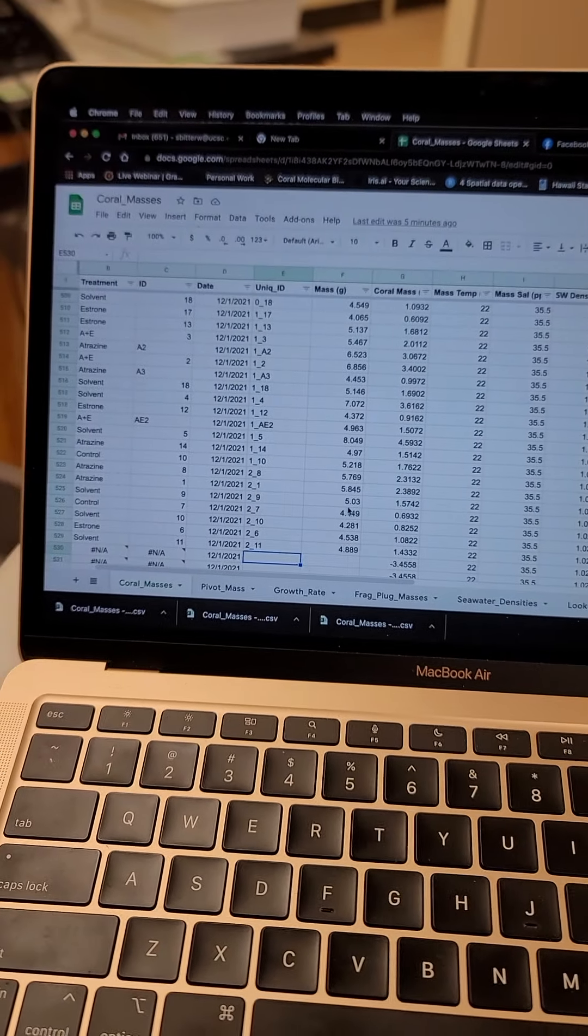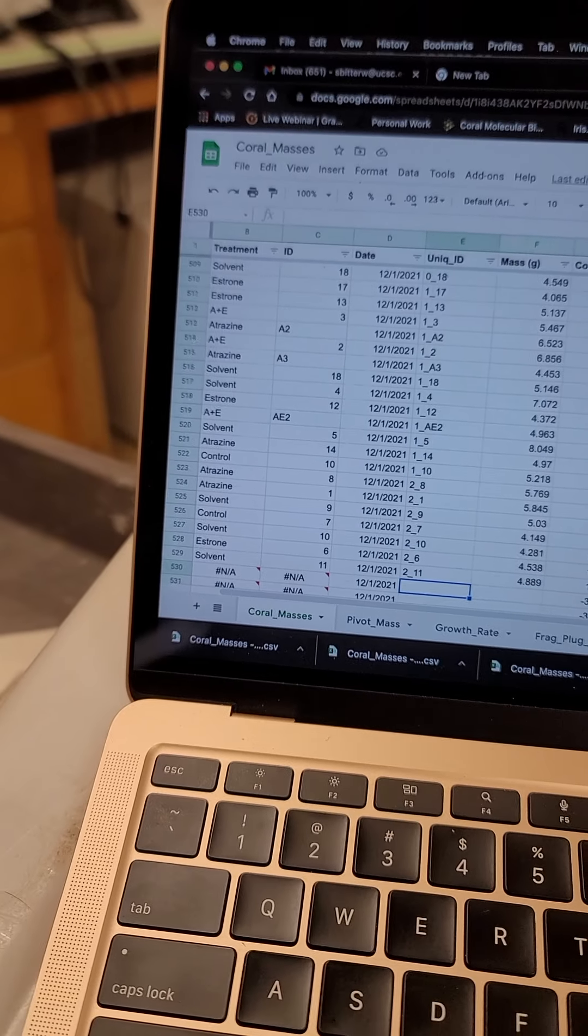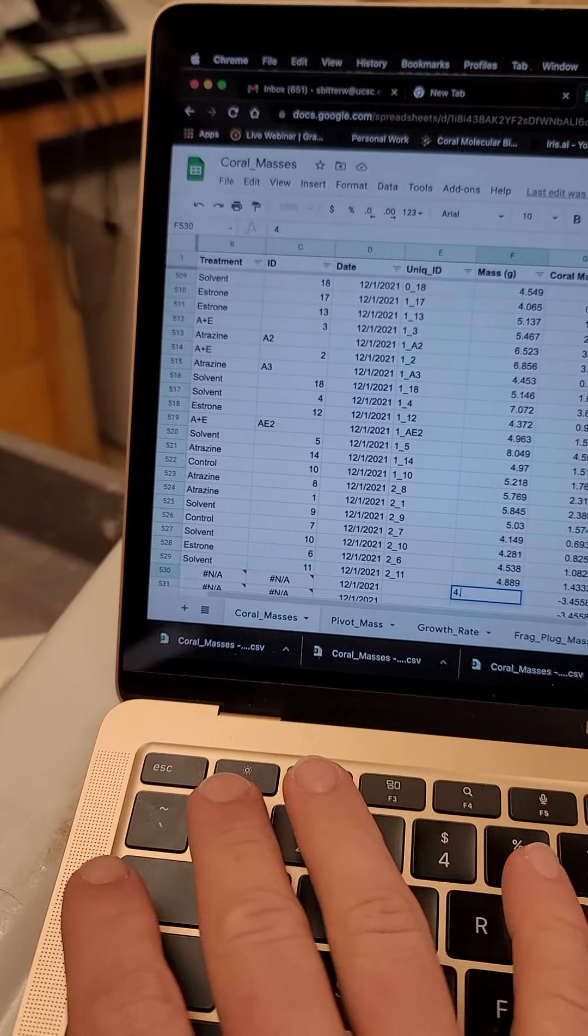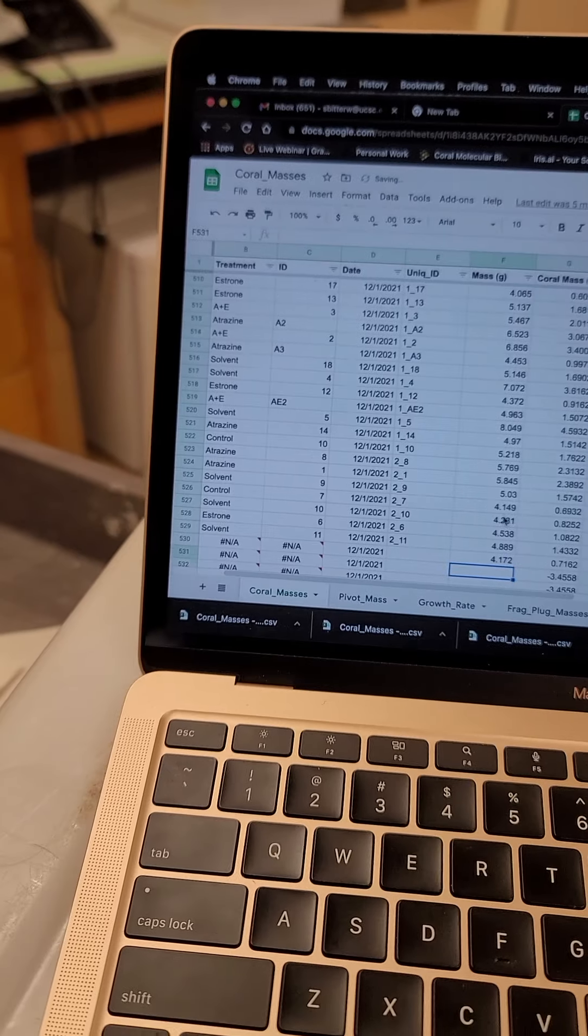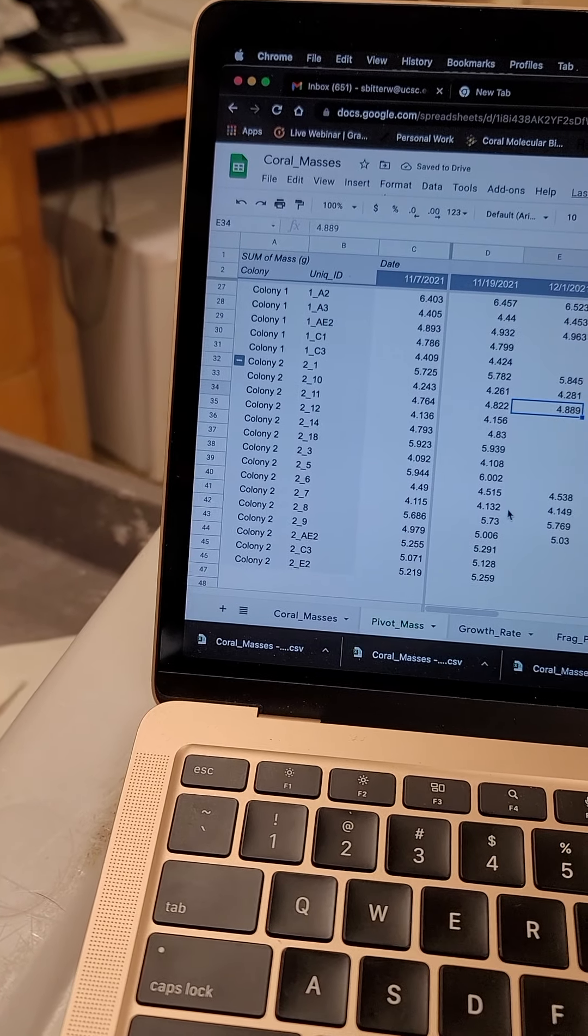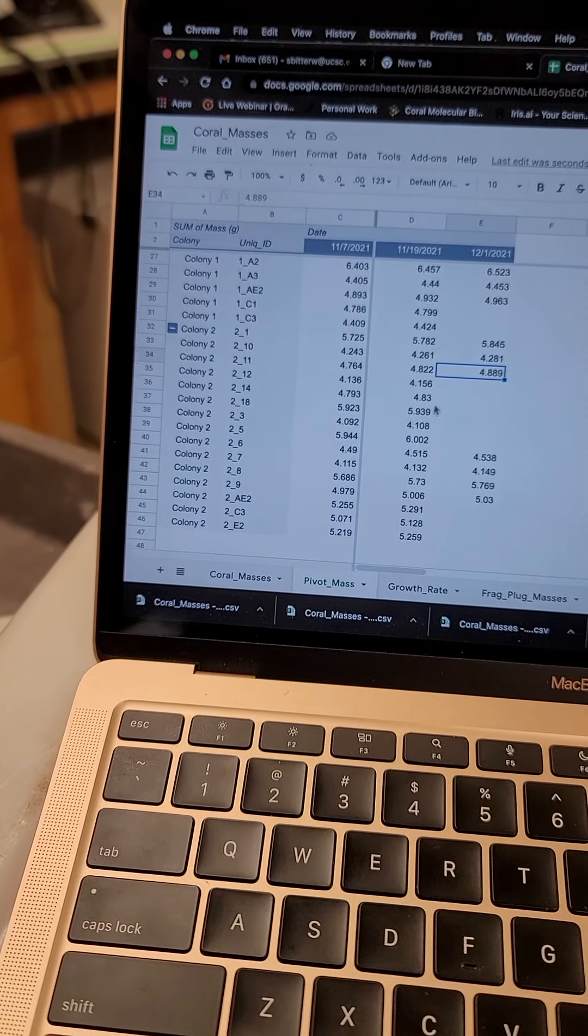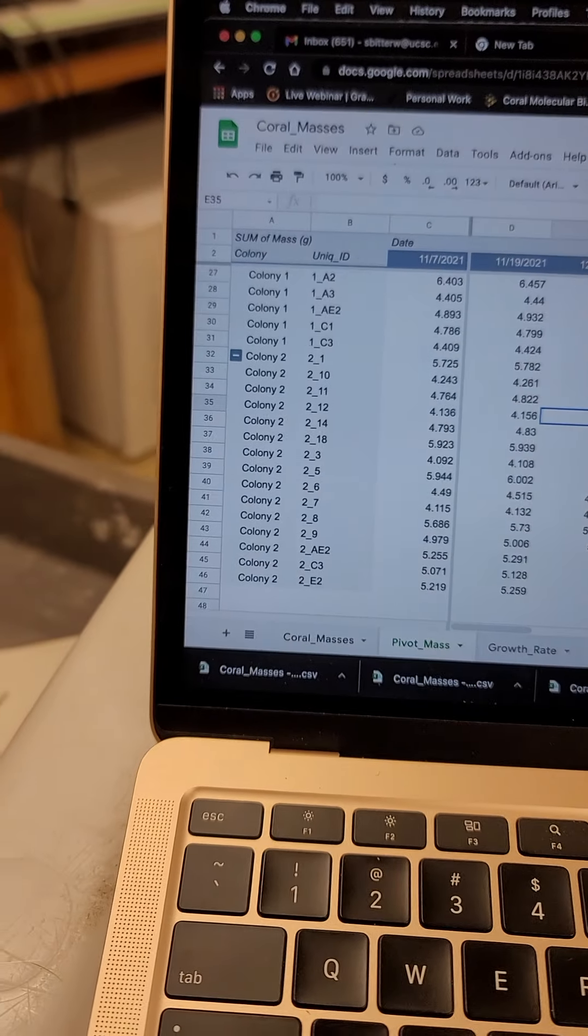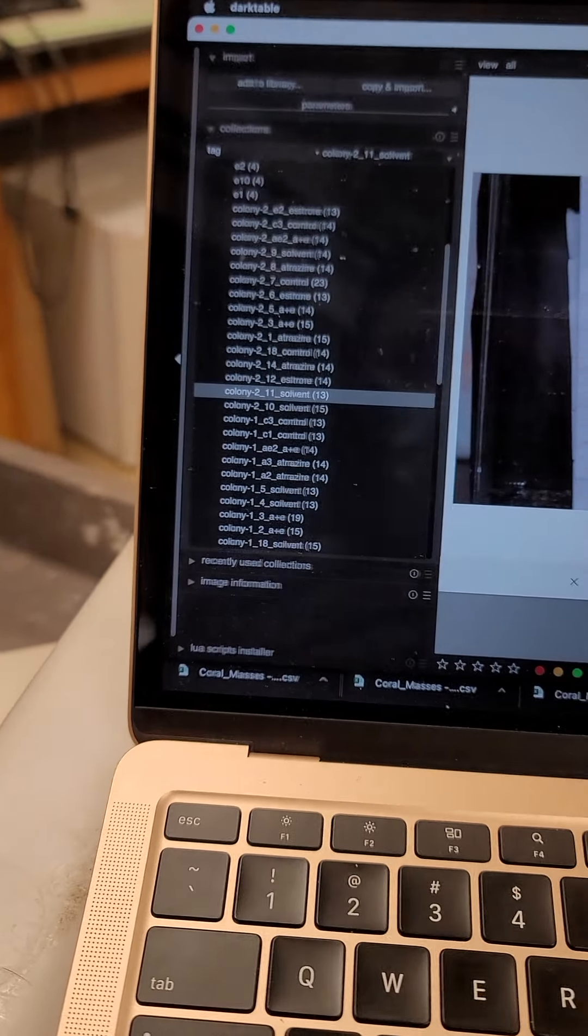And so what was the mass of that one? 4.172. And so that's probably colony 212. I have pictures of each of them so I can verify that.